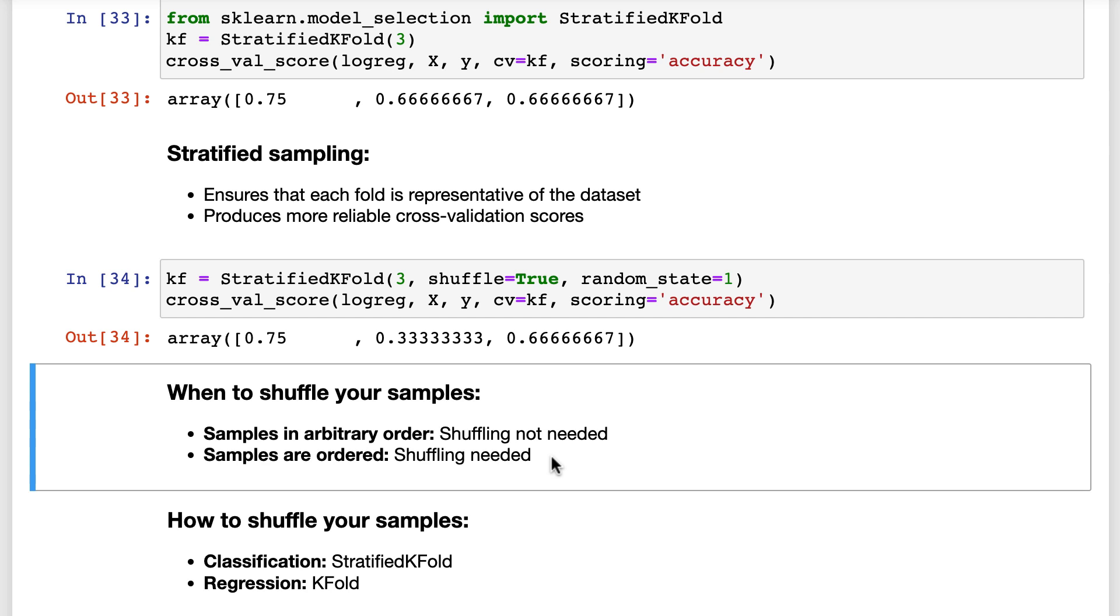Finally, it's worth mentioning that if you're working on a regression problem instead and you need to shuffle the samples, you should use the KFold class instead of the StratifiedKFold class, because stratified sampling does not apply to regression problems.